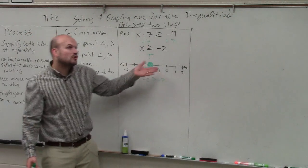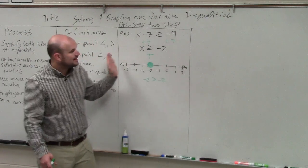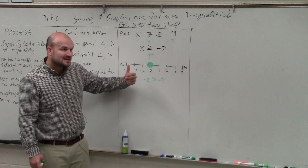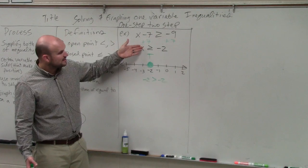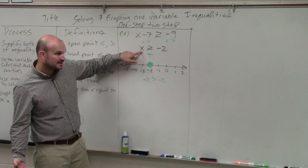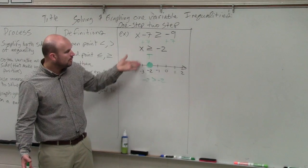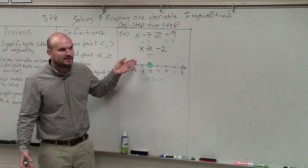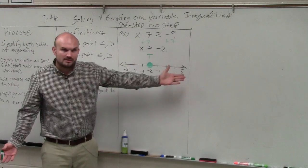Now, the next thing is we need to determine where do we shade? Do we shade points to the right? Do we shade points to the left? Again, you can use test points. Or I like to read it aloud: x is greater than or equal to negative 2. What are the numbers to the right or to the left that are greater than? To the right, right?